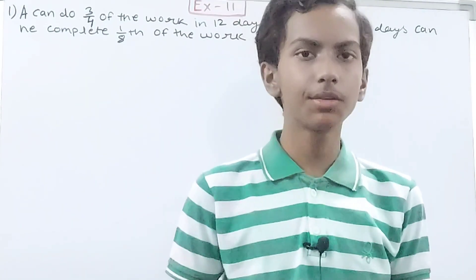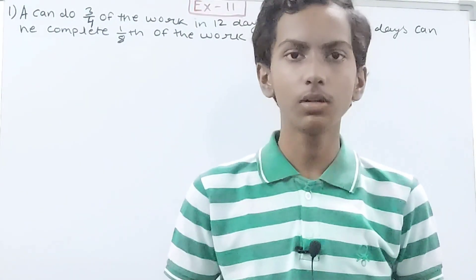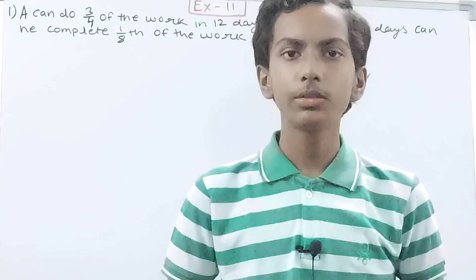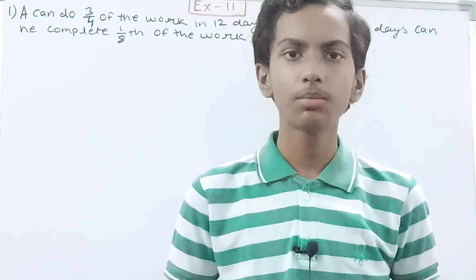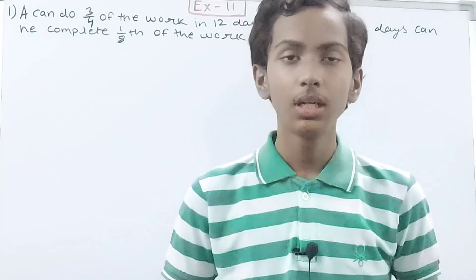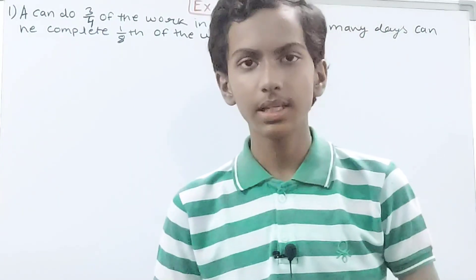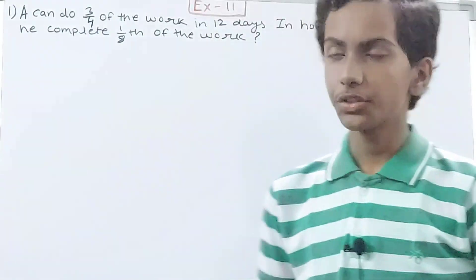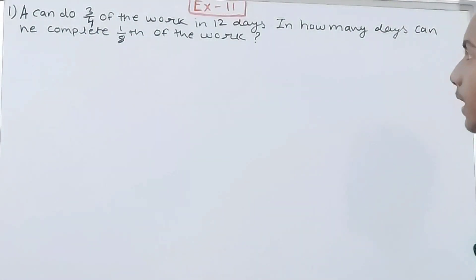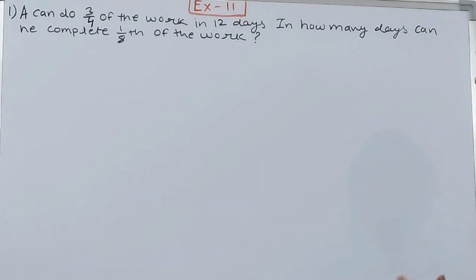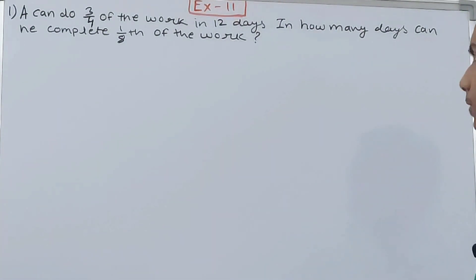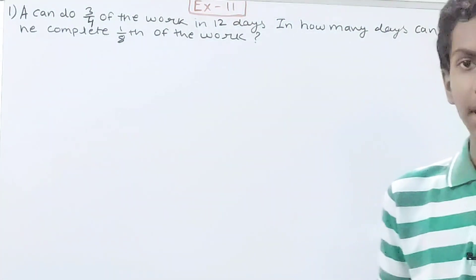Hello friends, welcome back to my YouTube channel 'Unlock Your Learning'. In this video we are going to solve ICSE Mathematics Class 8, Chapter 11: Time and Work, Exercise 11, Question 1. The question is: A can do three-fourths of the work in 12 days. In how many days can he complete one-eighth of the work?